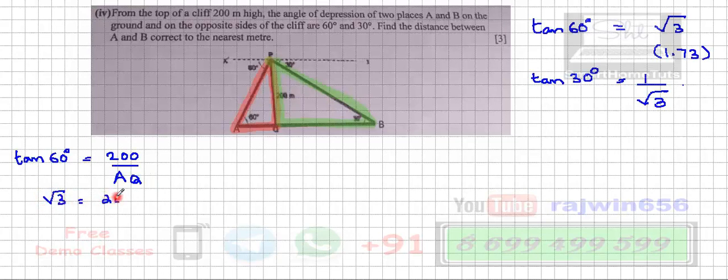This is equal to 200 upon AQ, so AQ is equal to 200 divided by root 3. I'll do all the calculations together.